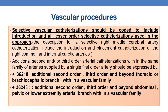Now coming to the CPT coding guidelines for vascular procedures. The first guideline is: selective vascular catheterizations should be coded to include introduction and all lesser order selective catheterizations used in the approach. For example, for a selective right middle cerebral artery catheterization, the procedure should include the introduction and placement of catheterizations of the right common and internal carotid arteries — which are the first order arteries from which the middle cerebral artery arises.